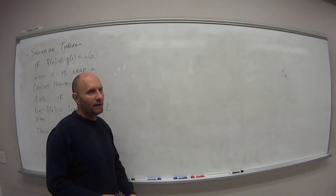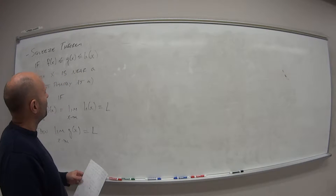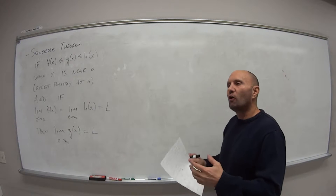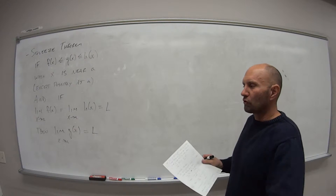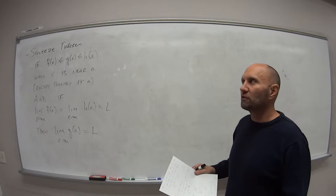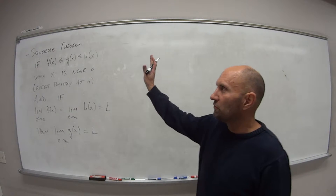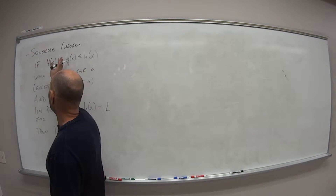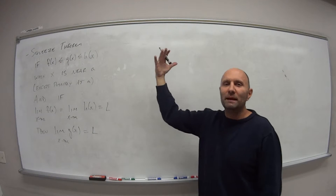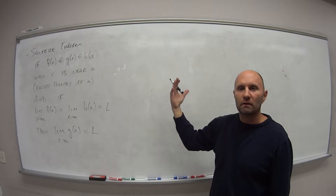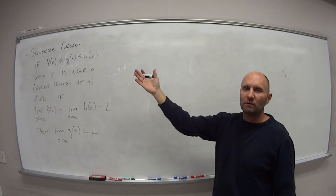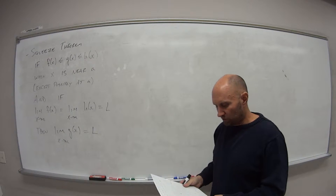Why do we use this? Why is this a big deal? Well, sometimes we get a function that is really messy. We can try all the algebra we want, we can try using all the different limit laws, and it just is a big mess. But if we can use the squeeze theorem — if we can find some function that's less than the function we're given, and some function that's bigger than the function we're given — and if we can find the limits on both ends and they're the same, then we know that the limit of the function in the middle has to be the same.